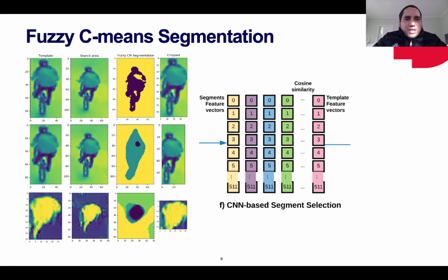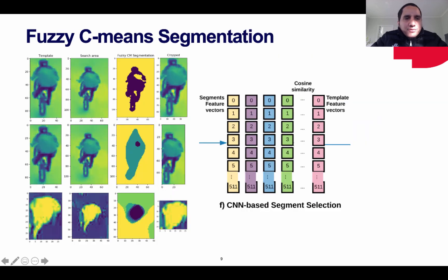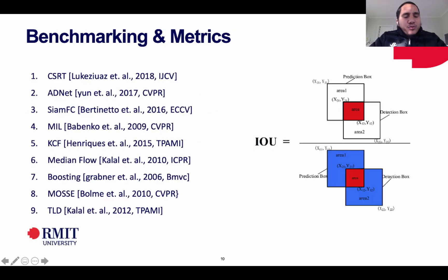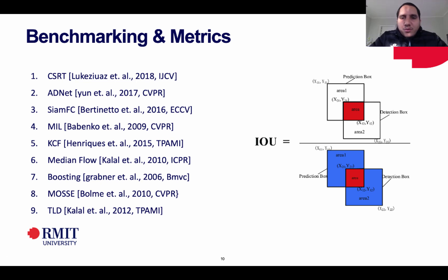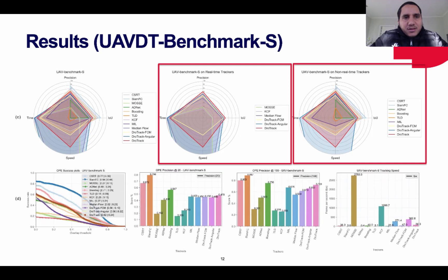For the fuzzy C-mean segmentation, we use four clusters and represent each cluster as a vector. We show different cases for the same object or four different objects, with two, three, or even five clusters. To demonstrate the superiority of DrawTrack, we compare its results in terms of speed and accuracy against nine baseline and state-of-the-art trackers. The main metric used to calculate accuracy and precision is intersection over union (IoU). We evaluated DrawTrack on two datasets: DT-V70 and UAVDT benchmark for single object tracking.